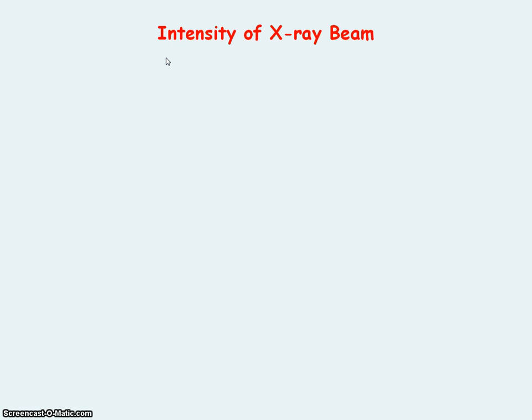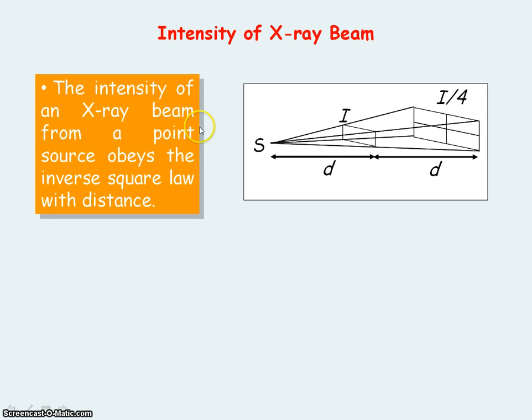Intensity is defined as the amount of energy arriving per unit area per unit time. The intensity of an X-ray beam from a point source obeys an inverse square law with distance — so if the distance is doubled, you'll have a quarter of the intensity of the X-ray beam.